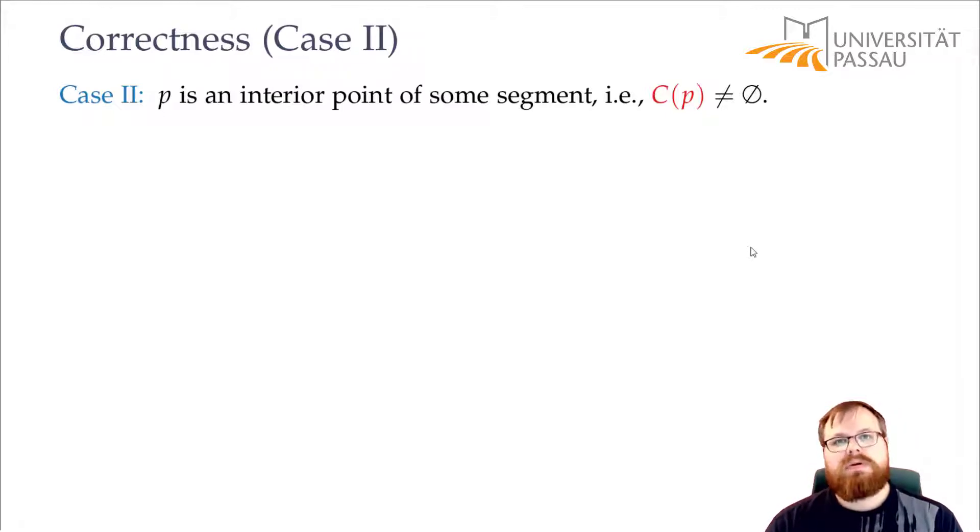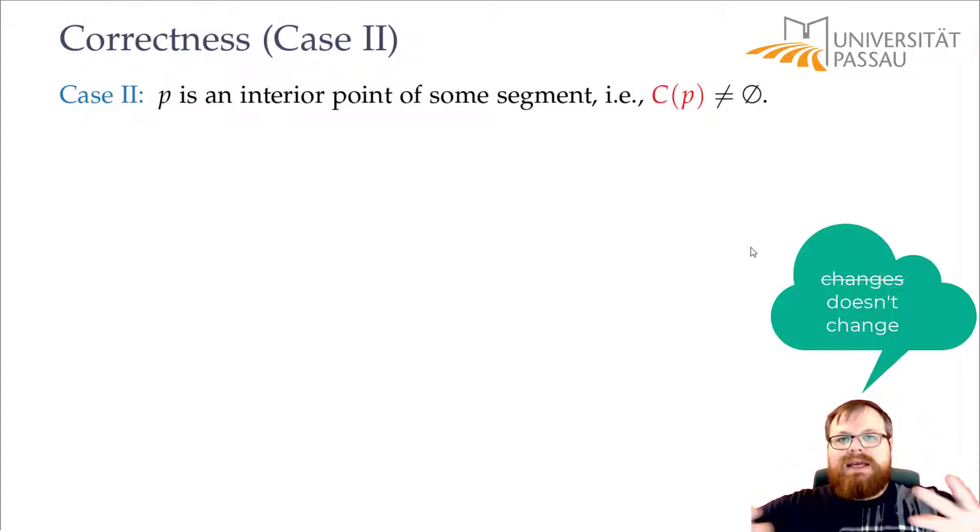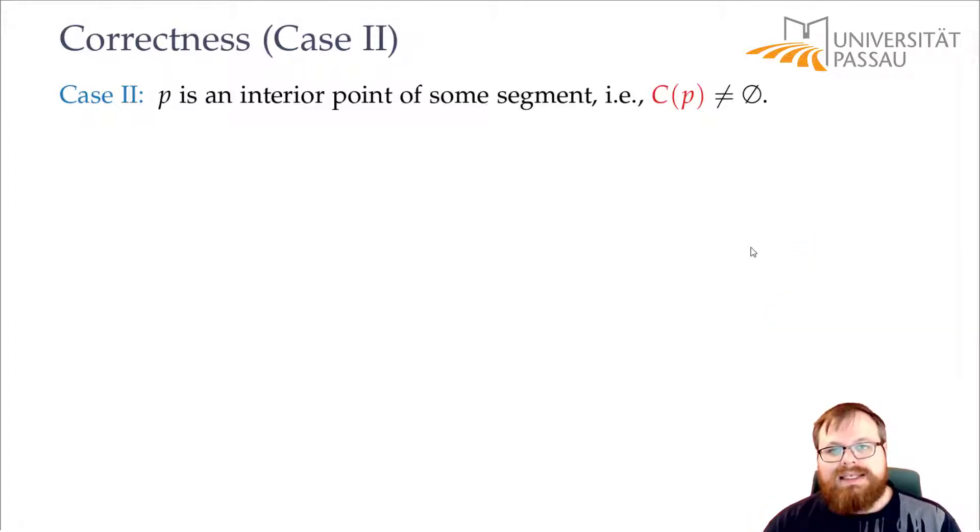Everything is clear. We will report it. We will remove all the segments that end there. We will reintroduce all the segments that start there. We remove and reenter those segments that go through P. Everything else is not affected. So the sweep line status is still correct and the point is reported.